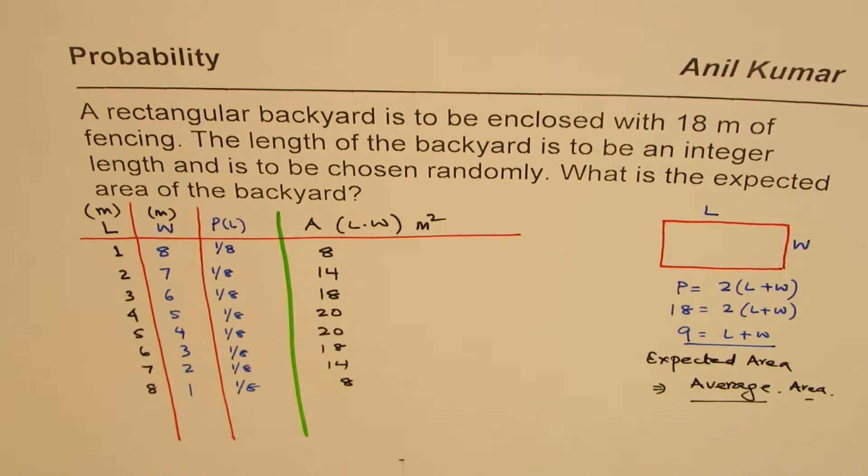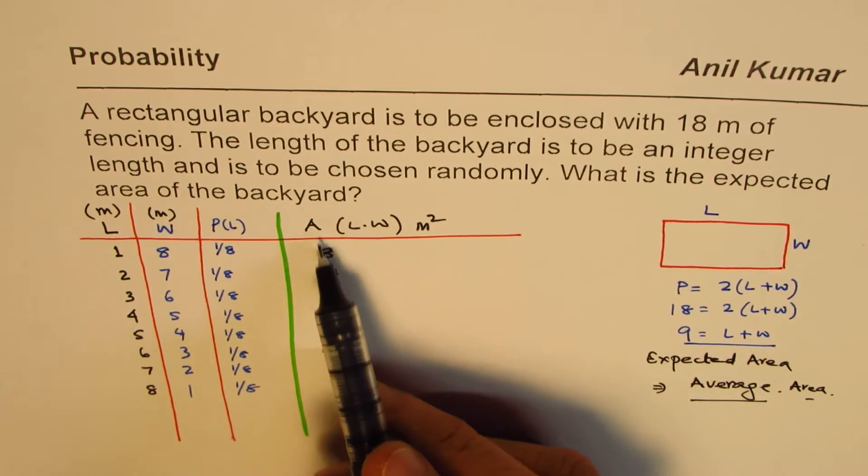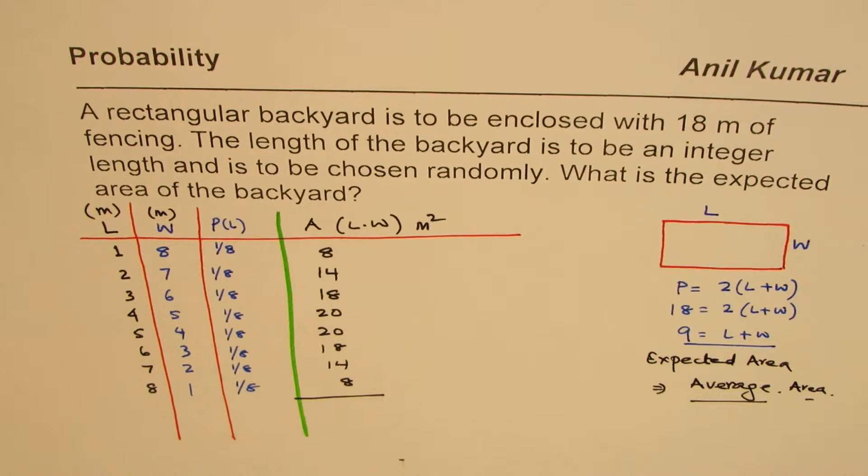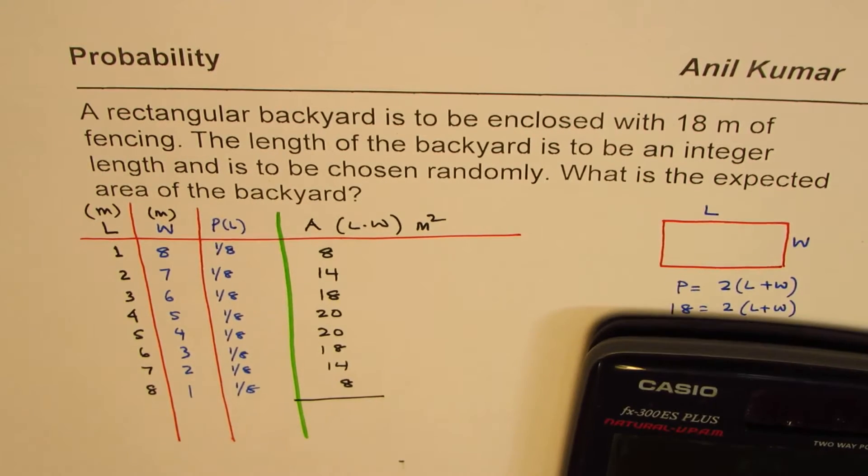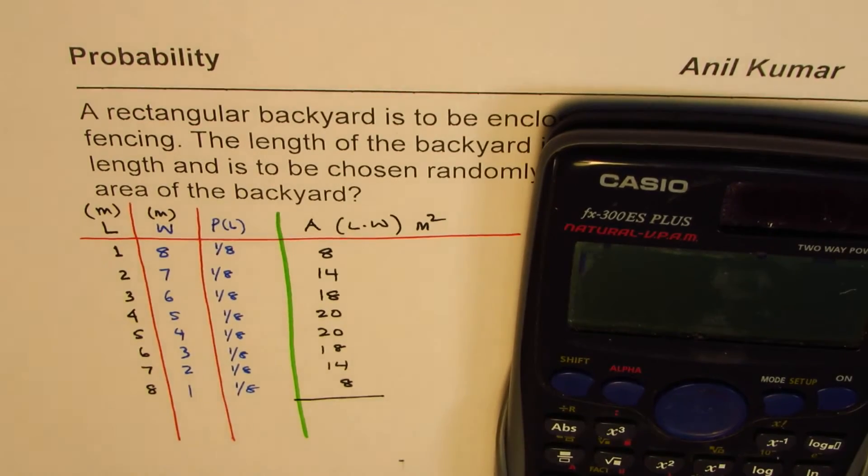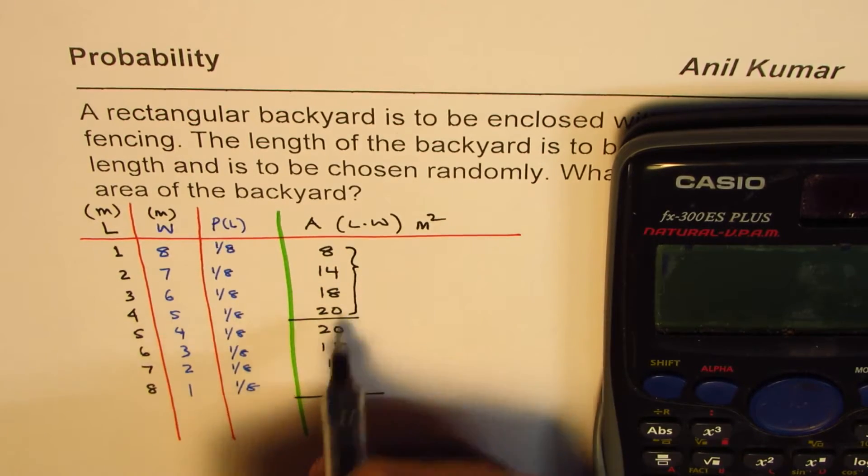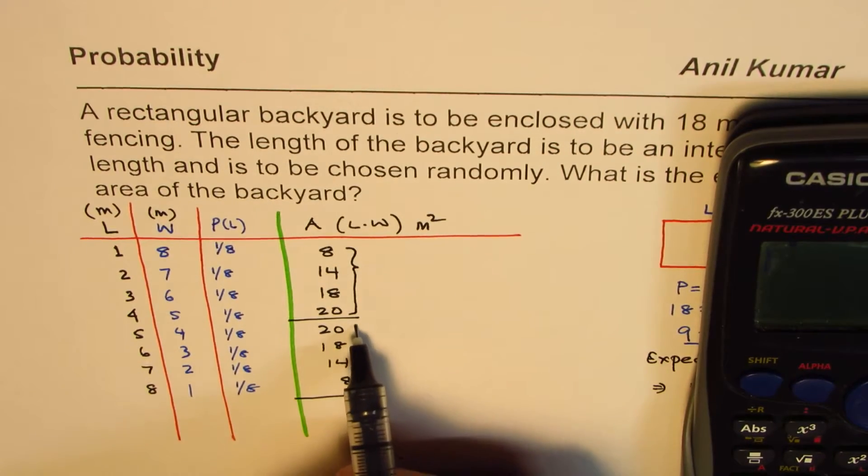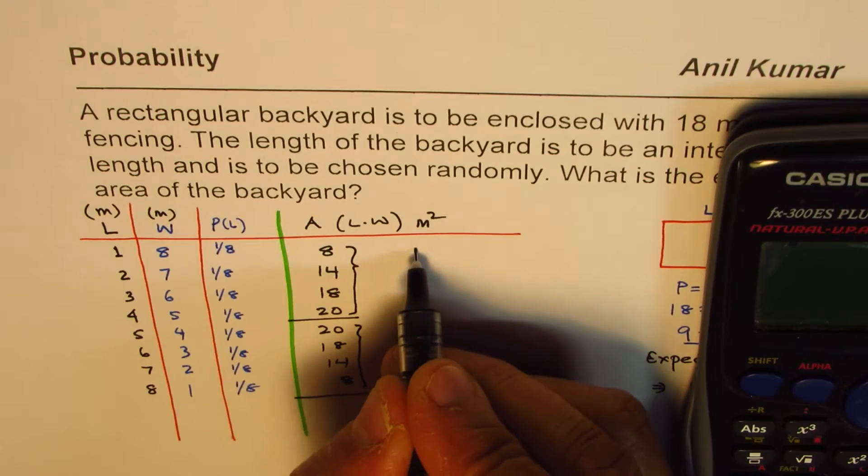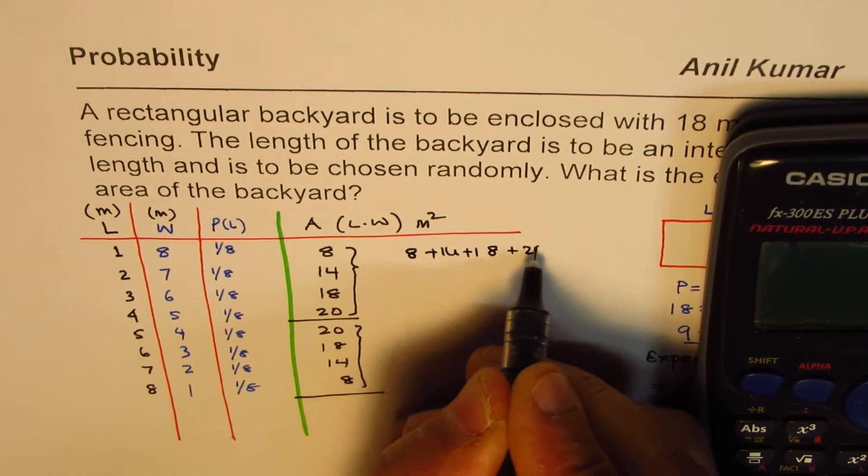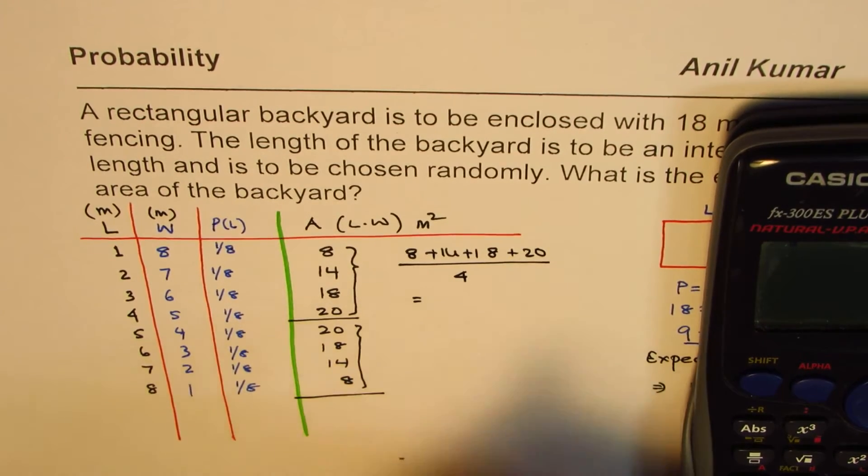Now one way, which I think is simpler, is average area we are looking into. So you can add them all and divide by 8. So those are 8 areas. Or you could add 4 of them, divide by 4. One and the same thing. So we will add 4 of them. So what we will do is we will add these 4 and divide by 4. They are repeating. So 8 plus 14 plus 18 plus 20 divided by 4 gives us the average.